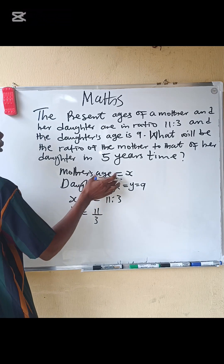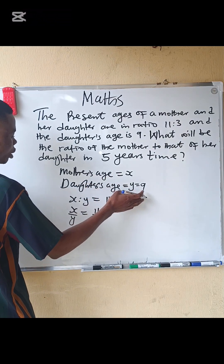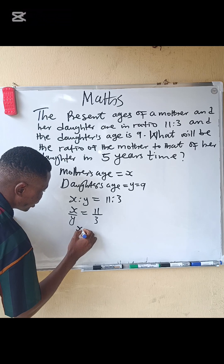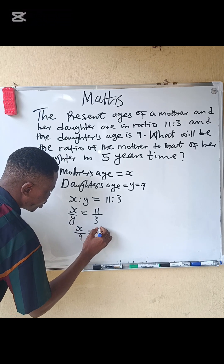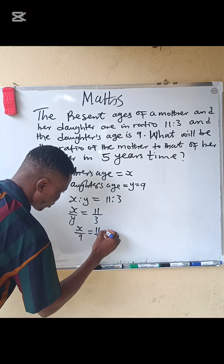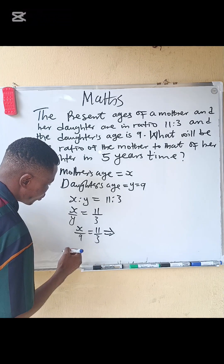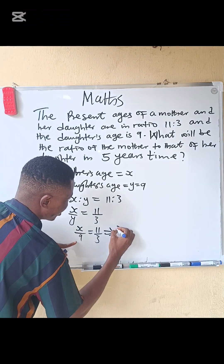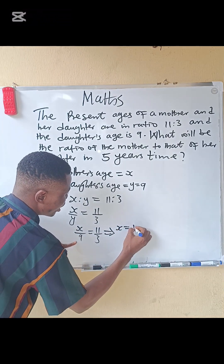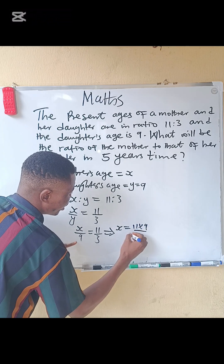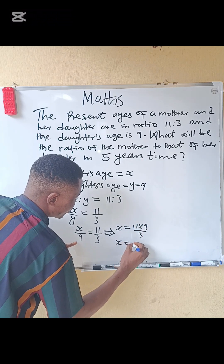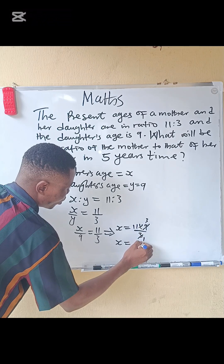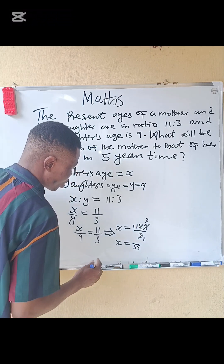From here we can find the mother's age since we know the daughter's age. We have x divided by 9 equals 11 divided by 3. Cross multiplying gives x equals 11 times 9 divided by 3, so x equals 33.